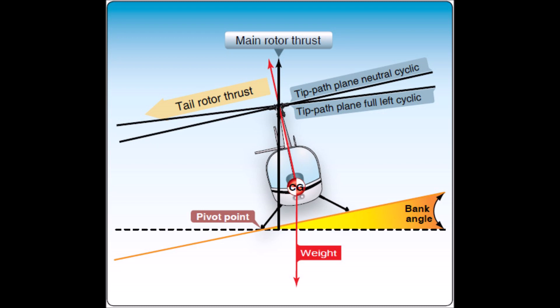Two, right lateral center of gravity, where one side of the helicopter is heavier than the other. Three, a crosswind from the left. Or four, left yaw inputs.